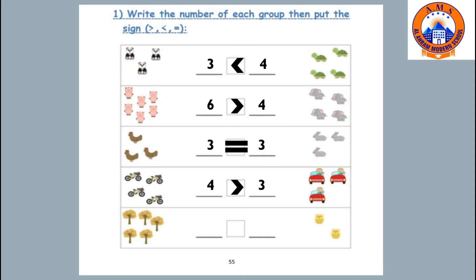How many trees in the last picture? One, two, three, four, five. And how many owls? We have two owls. So the suitable sign is greater than — five is greater than two.